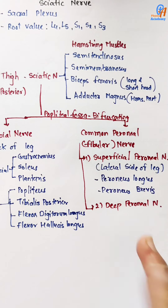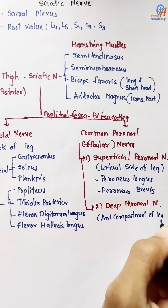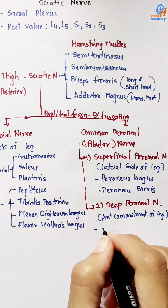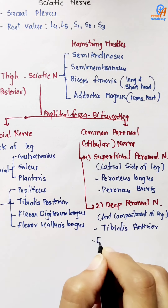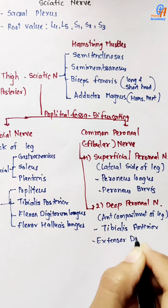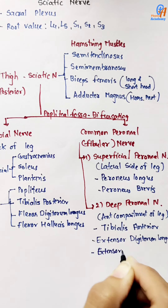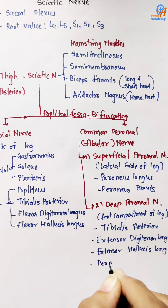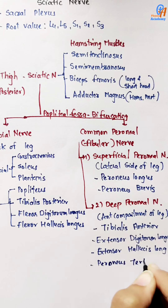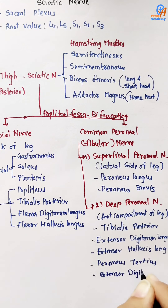The deep peroneal nerve supplies the anterior compartment of the leg: tibialis anterior, extensor digitorum longus, extensor hallucis longus, and peroneus tertius. It also supplies extensor digitorum brevis and extensor hallucis brevis in the foot.